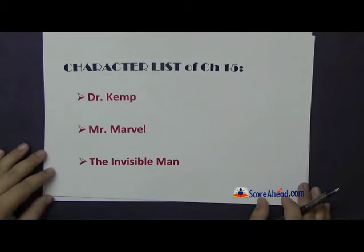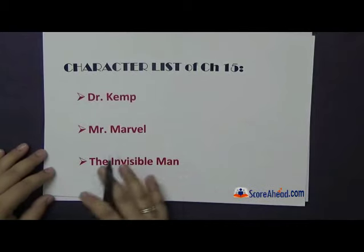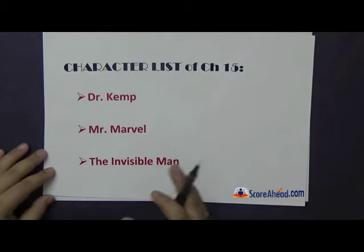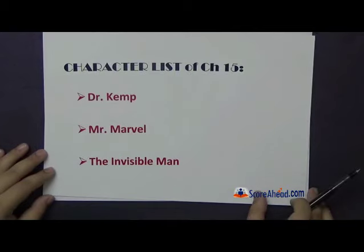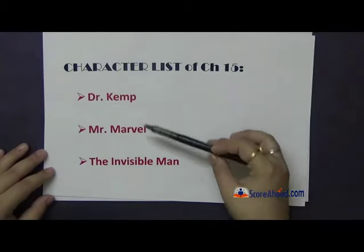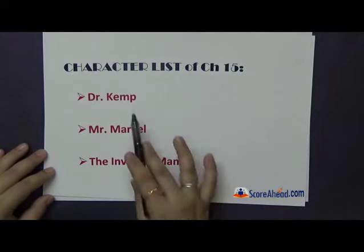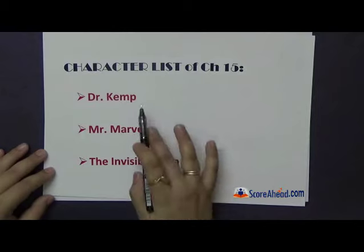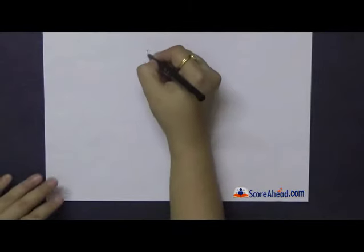The character list for Chapter 15 includes Dr. Kemp, Mr. Marvel, and the invisible man — apart from the other villagers of course. These three are the most important characters of the novel, and all three are listed right here in this chapter.